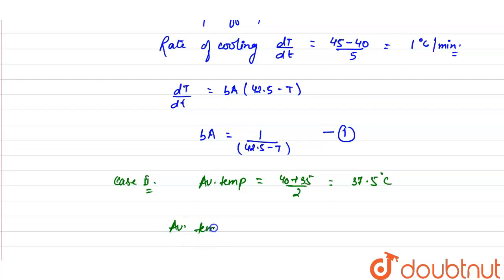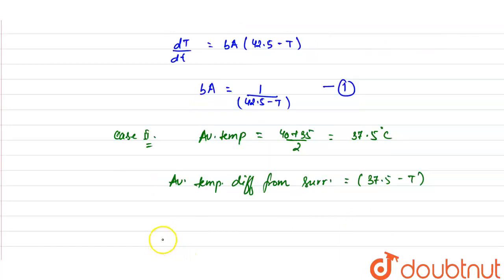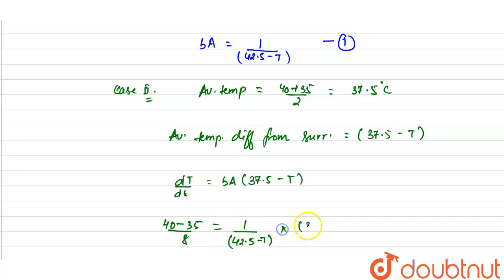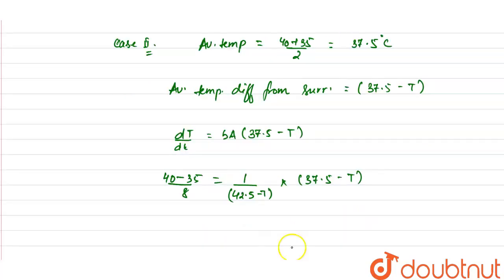The average temperature difference from the surrounding is 37.5 minus T. From Newton's Law of Cooling, dT/dt = bA × (37.5 − T). The rate of cooling is (40 − 35) / 8 = 5/8 degree Celsius per minute. Substituting bA from equation 1: 5/8 = (37.5 − T) / (42.5 − T).